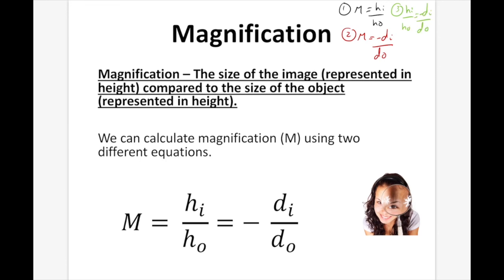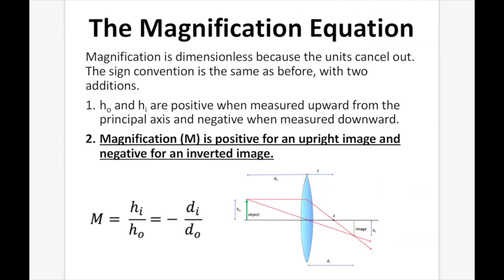Magnification is dimensionless because the units cancel out — if heights are in centimeters and distances are in centimeters, the units cancel. The sign convention has two additions: HI and HO are positive when measured upward from the principal axis and negative when measured downward. Magnification is positive for an upright image and negative for an inverted image. Upright means the same orientation as the object, whereas inverted means opposite to the object.